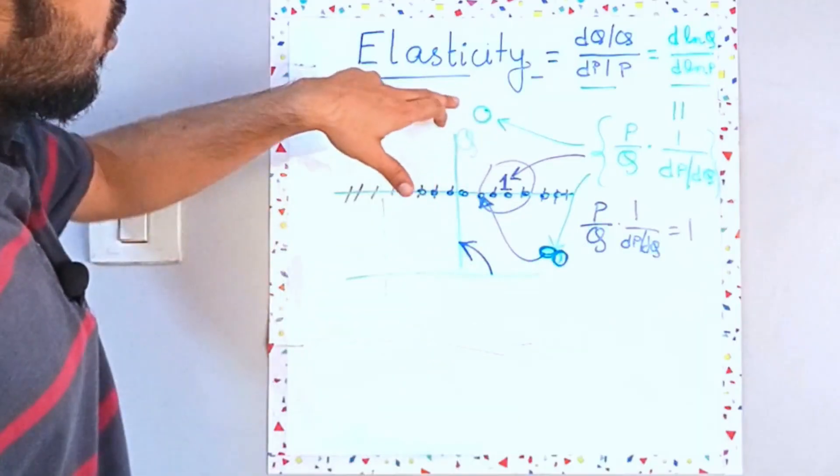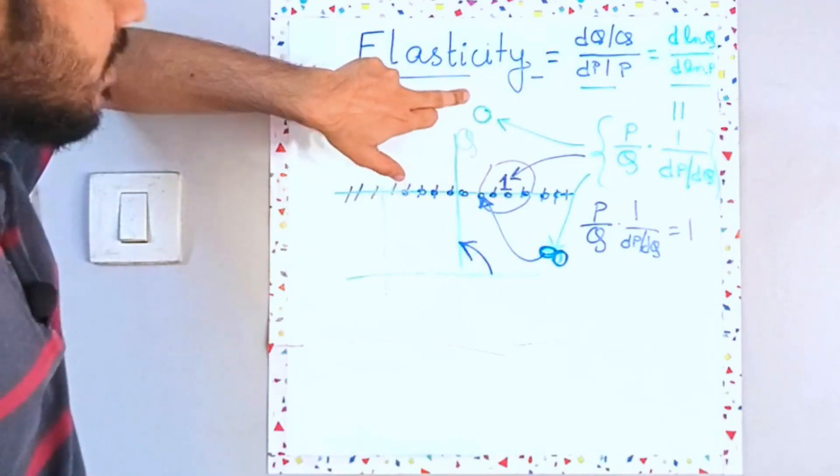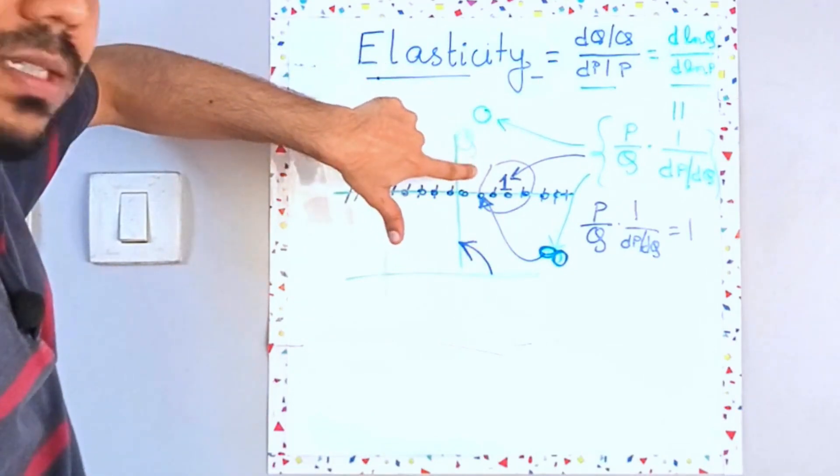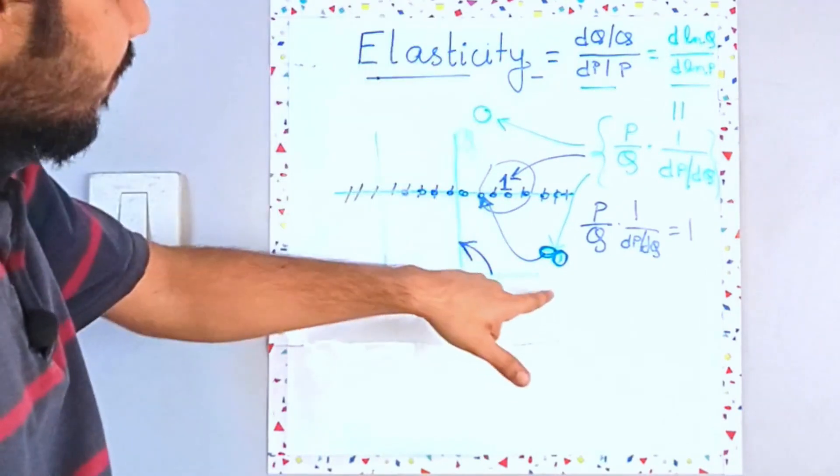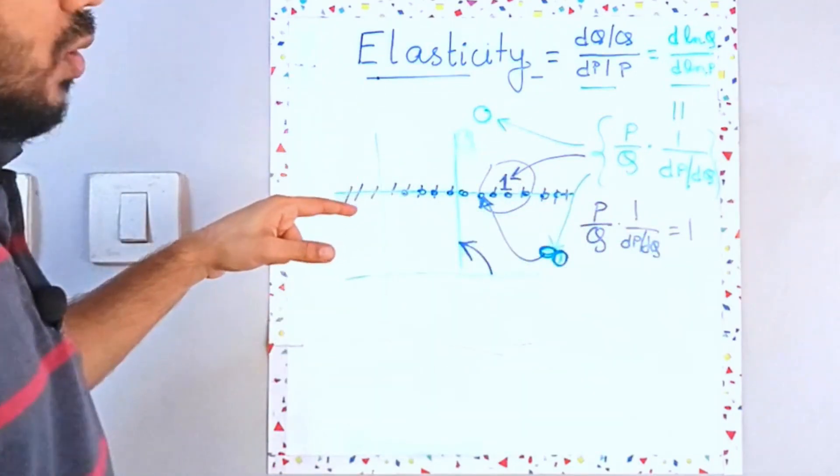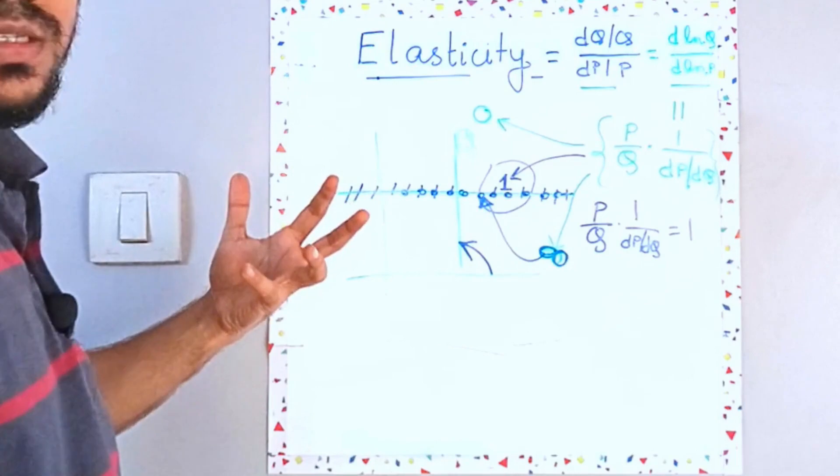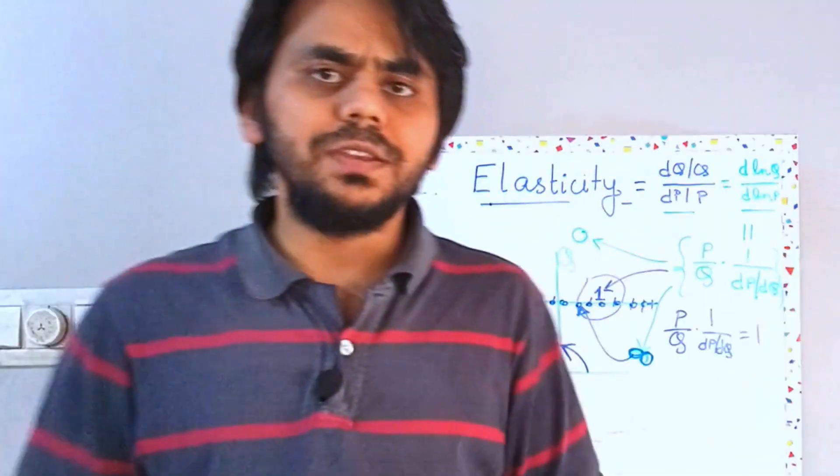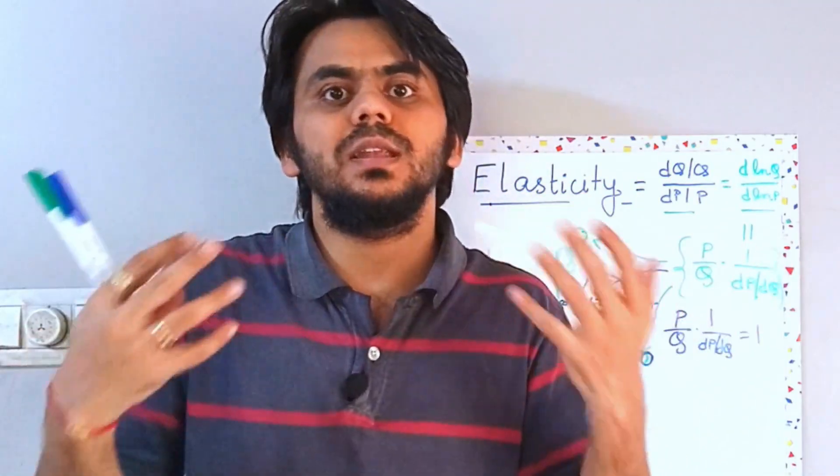So your zero was inelastic, one was unit elastic and infinity, when you have a flat demand, that is your perfectly elastic or highly elastic. So this was an intuitive understanding of elasticity and price elasticity.